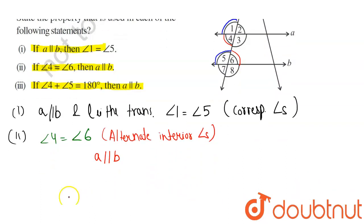In the third part, it is given that angle 4 plus angle 5 equals 180 degrees.